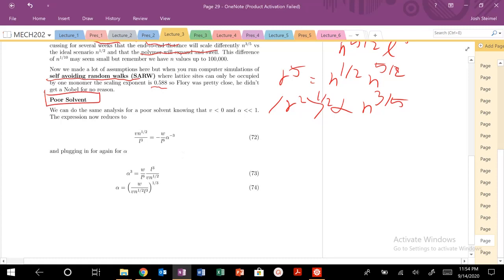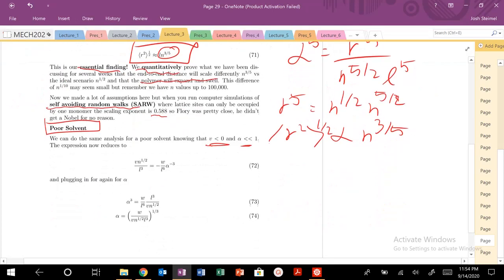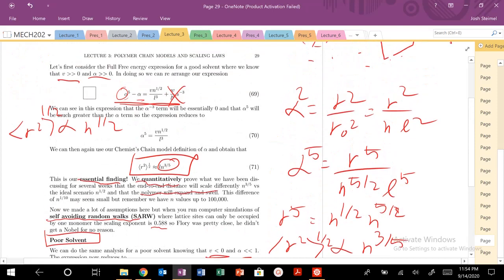So, we can do the same thing now for a poor solvent. So, for a poor solvent, we know that V is less than 0 and our alpha is much, much less than 1. So, when we go back over here, let's kind of erase this one. Over here now, we look back at this term. If alpha is much, much less than 1, well, then we know... If alpha is much, much less than 1, we know that this term is going to be large.